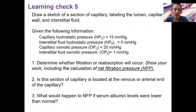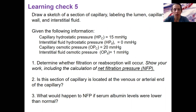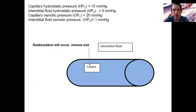And then, what would happen to NFP if serum albumin levels were lower than normal? I will walk through this one, at least the basic math. Here's my sketch of the lumen.